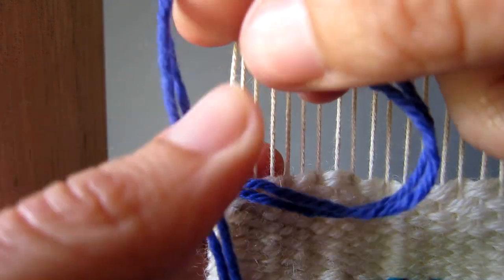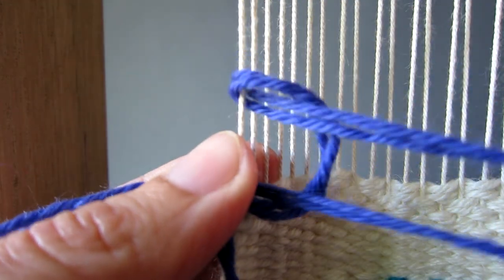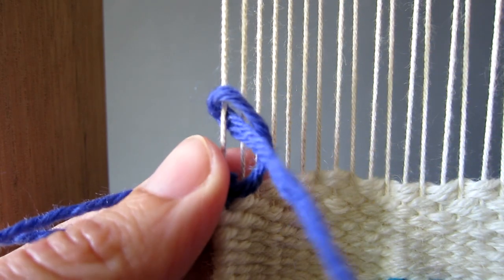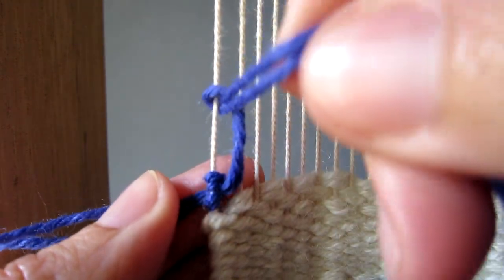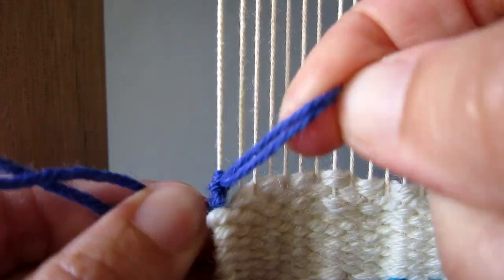Finally make a third D-shaped loop and pull through the yarn, once again tightening by pulling downwards. Here is a close-up of the knot.